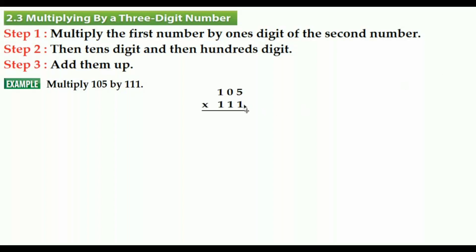Let's see our example: multiply 105 by 111. Let's write the question. First of all, remember the first rule — you are going to multiply. This is the first number and this is the second number. You are going to multiply the first number by the ones digit.